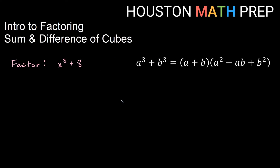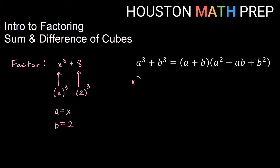Here we have the example X cubed plus eight. This is a sum of cubes — notice the addition between the two cubes. We identify that X is being cubed and 8 is 2 cubed, so A equals X and B equals 2. We'll build the factors: A and B go in the short factor, giving us X and 2, and we'll apply SOAP for the signs at the end.